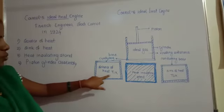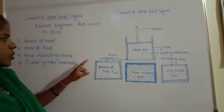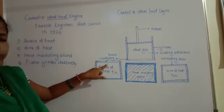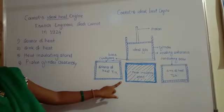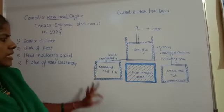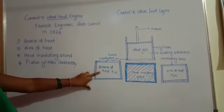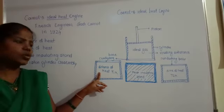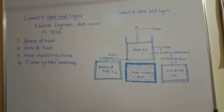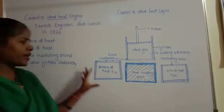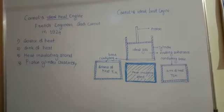The first part is the source of heat, which is maintained at the higher temperature T1. Three sides of the source have insulating covering, so there is no transfer of heat from those three sides — heat is transferred only from the top conducting part. Whenever heat is extracted, there is no change in temperature because the source has infinite capacity, maintaining T1 as the higher temperature constantly.